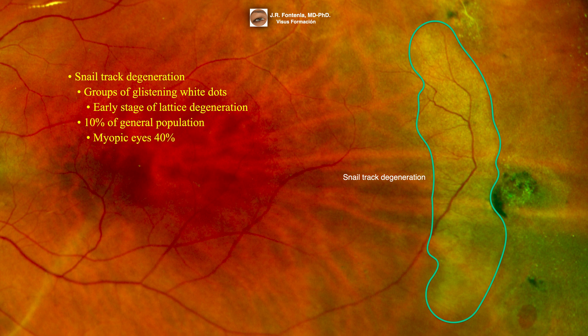Prevalence: found in 10% of the general population, more commonly in myopic eyes with 40%. It is a retinal thinning with vitreous liquefaction above the lesion, associated with vitreo-retinal traction.